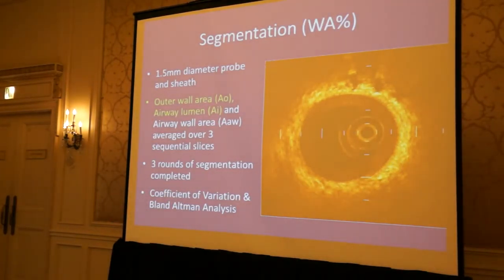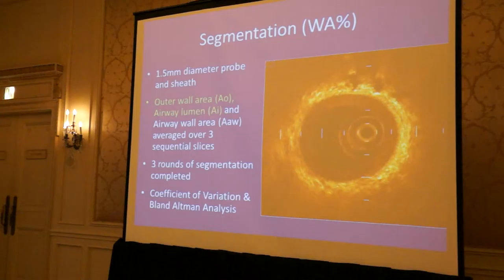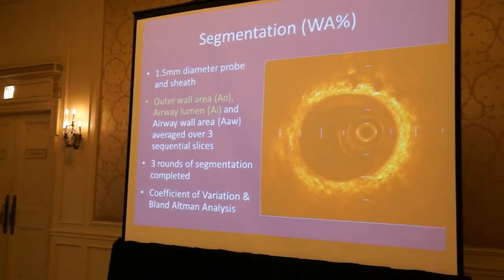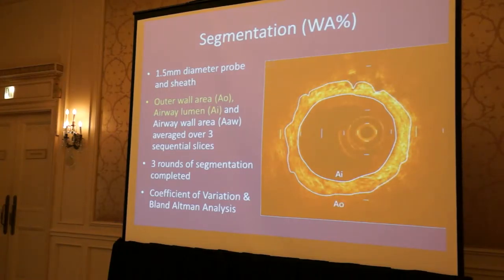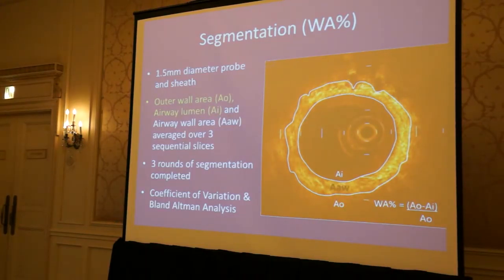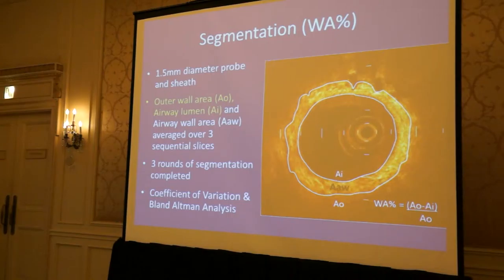Changes in morphology are a key indicator of disease progression, so a main part of my study involved segmentation of the airway. We segmented the inner airway wall, the airway lumen, and the outer airway wall, giving us the total wall area percent measurement. All images underwent three rounds of segmentation, and to eliminate visual bias, all images were randomized beforehand. From the measurements, we calculated a coefficient of variation for all measurements, as well as a Bland-Altman analysis.